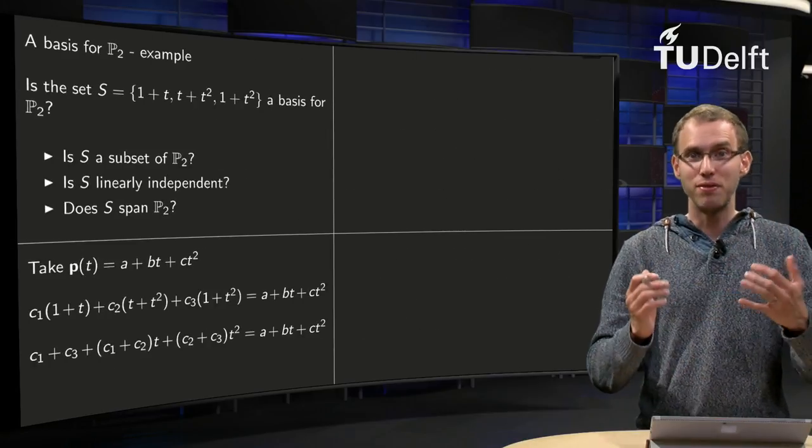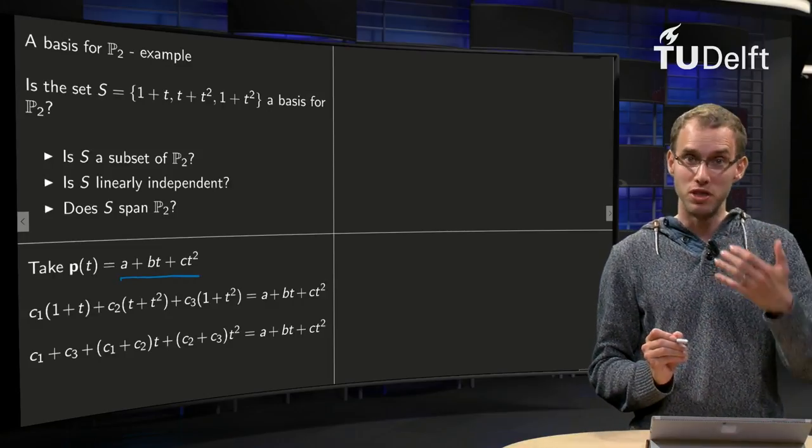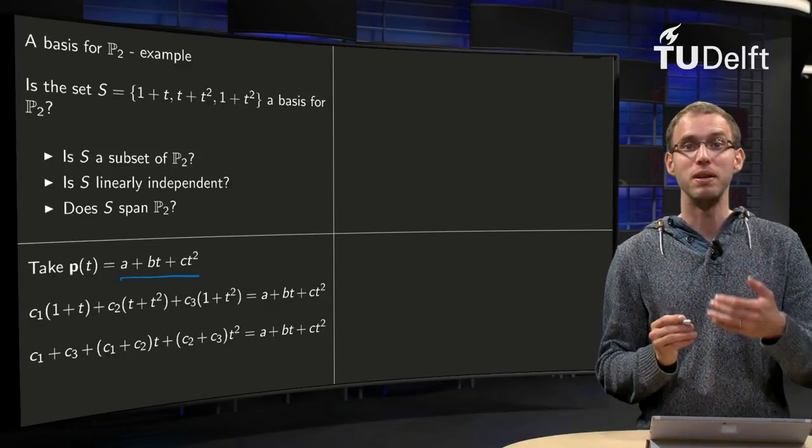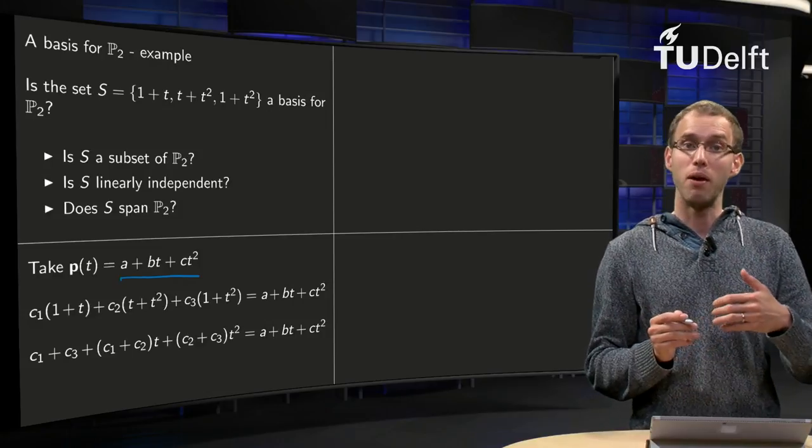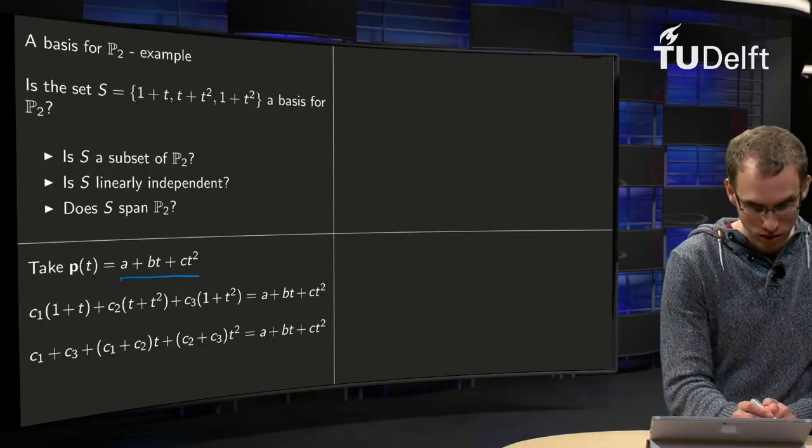So, take any vector in P₂, say p equals a plus b times t plus c times t squared, where a, b, and c can be any number in R. We will have to be able to make that out of our three vectors v₁, v₂, and v₃.